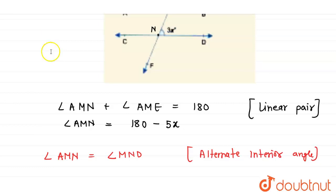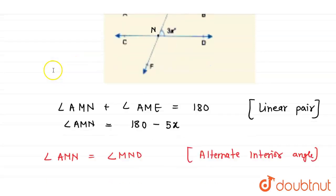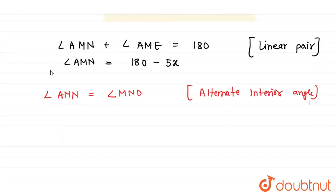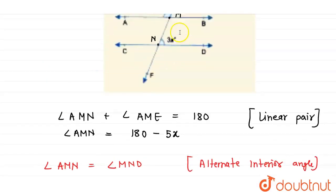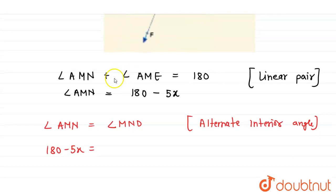And since angle AMN is 180 minus 5x and angle MND is 3x,